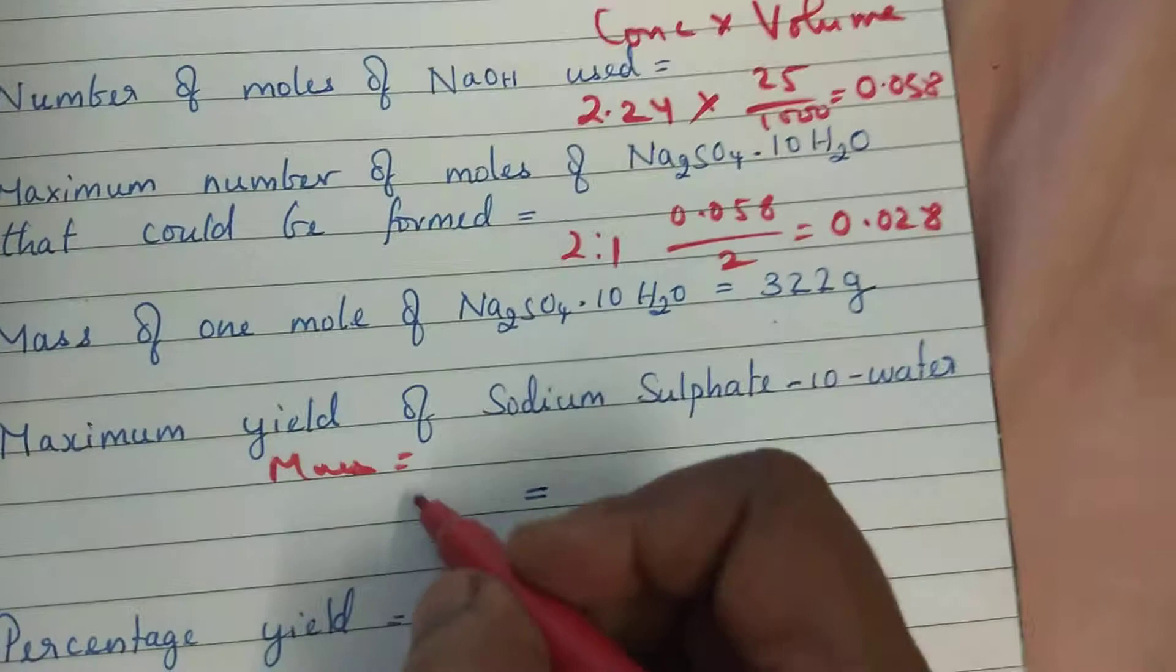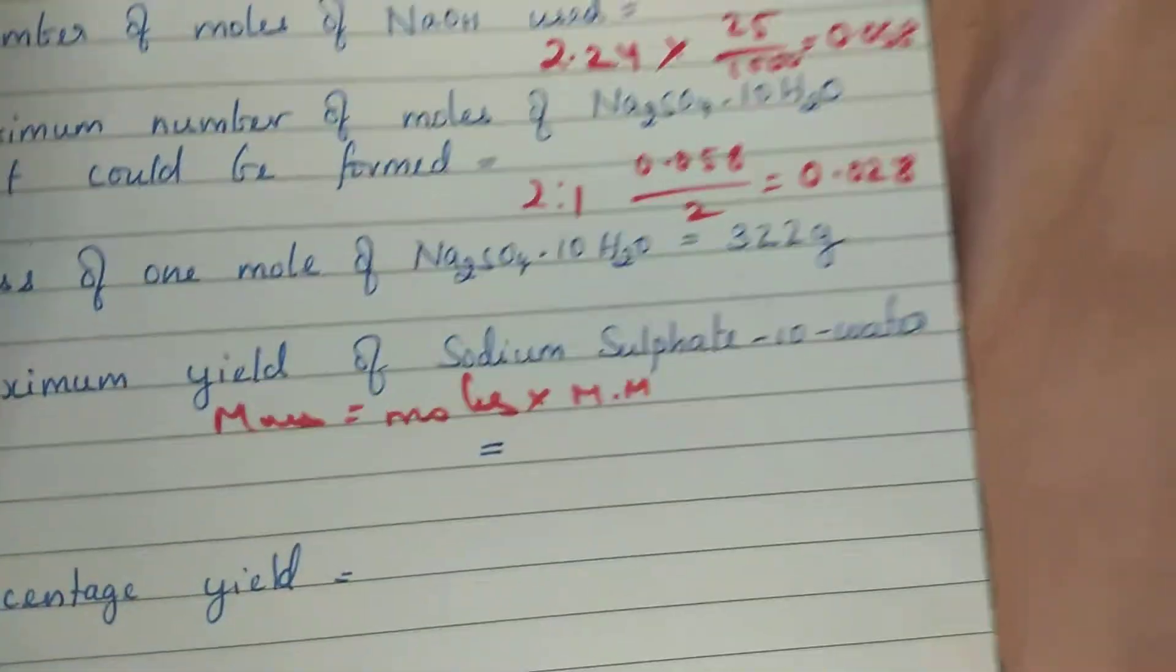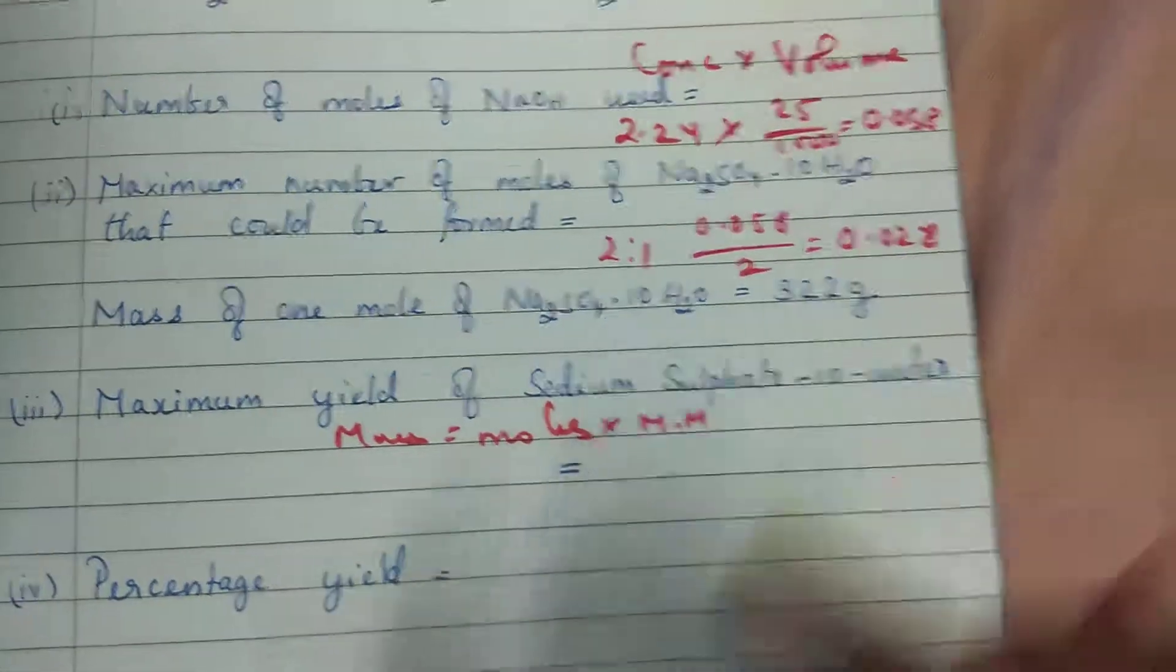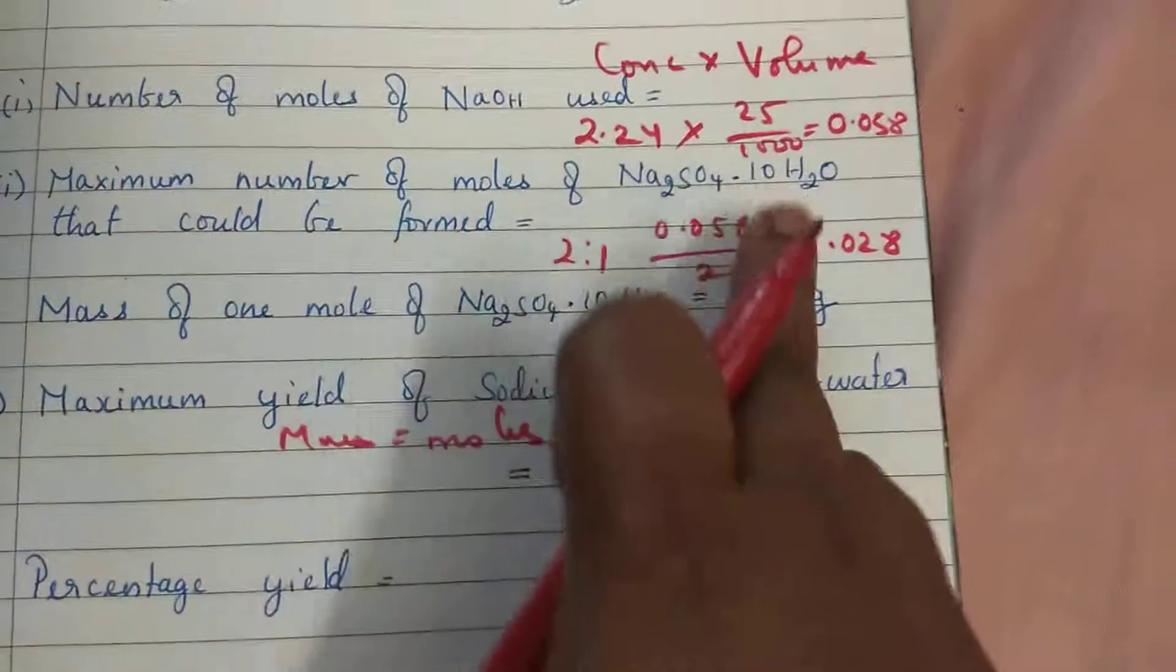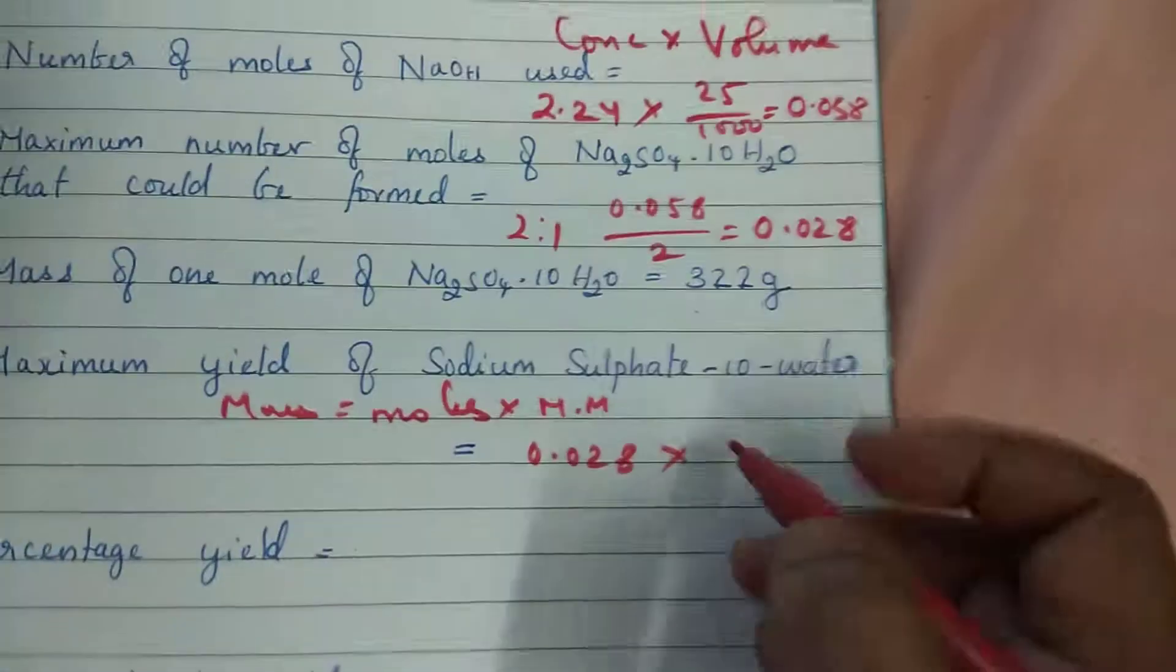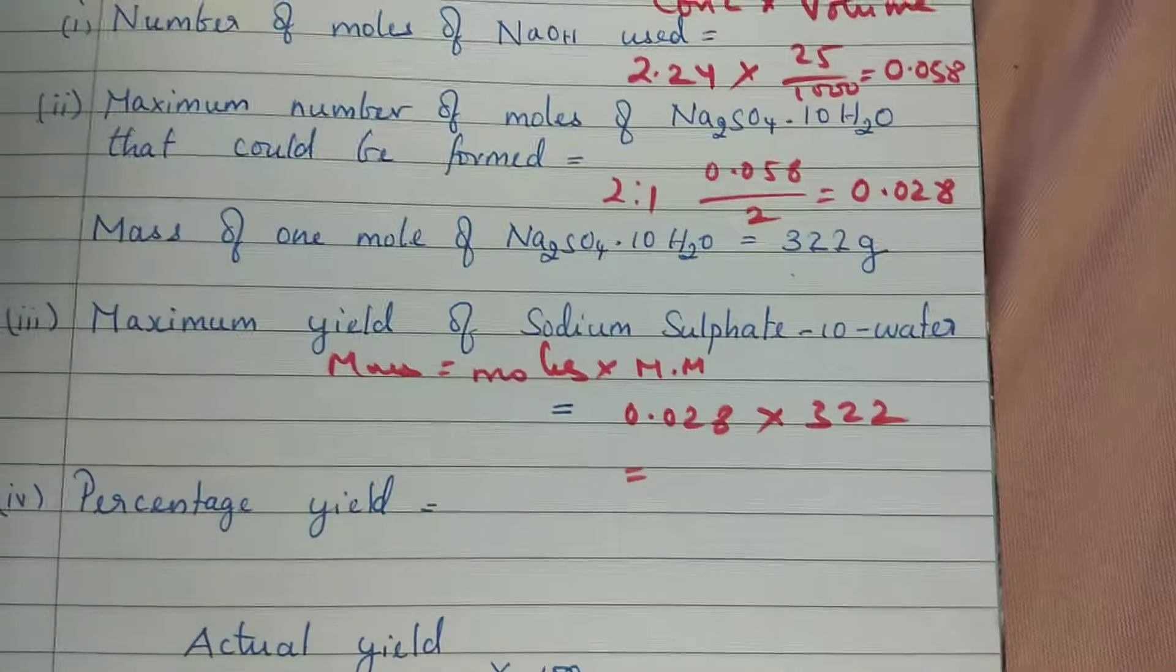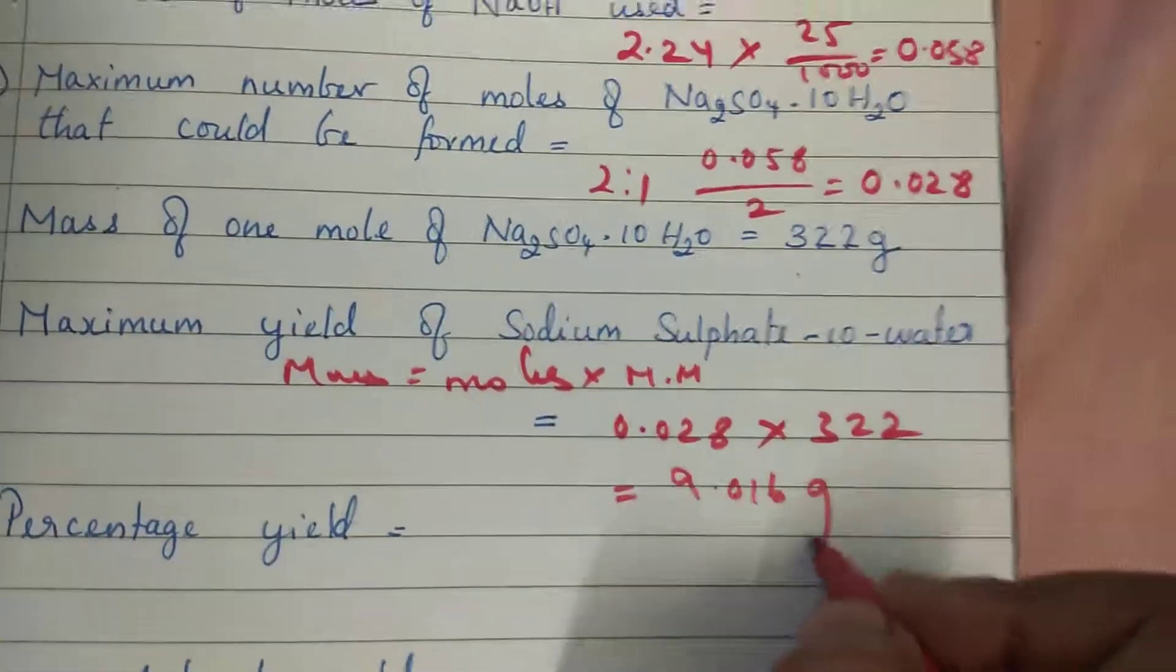What is the formula? Mass is equal to moles into molar mass, that is MR value. So moles is what we have calculated, 0.028 moles. 0.028 moles of hydrated sodium sulfate into the molar mass which they have given in the question. The maximum yield of sodium sulfate now is 9.016 gram.